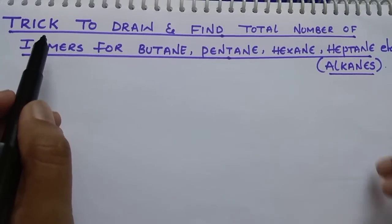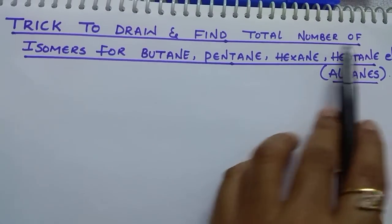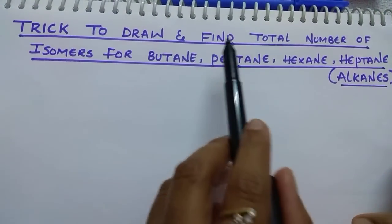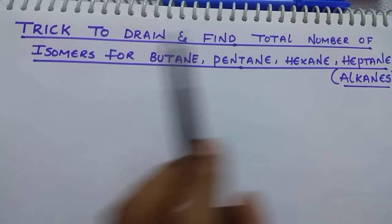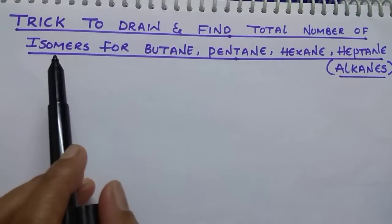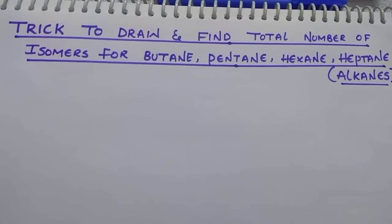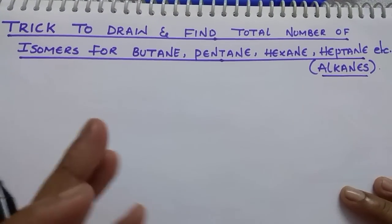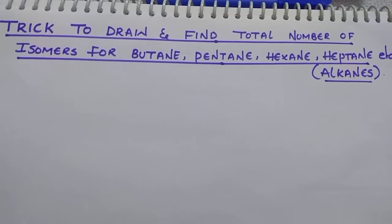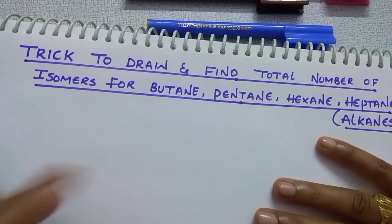Hi students. In today's session I am going to teach you an excellent trick to draw and find the total possible number of isomers for alkanes. First I will teach you how to draw, then finding the total number of isomers. At the end of this session I am going to reveal the trick to find total possible isomers. Thanks for giving a lot of likes and comments to my videos — it gives a boost to do more concepts in an easier way. Let's start the concept.